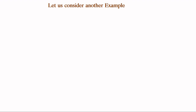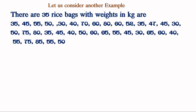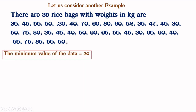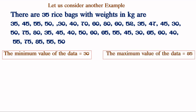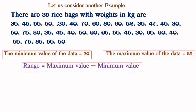Let us consider another example. There are 35 rice bags with weights in kilograms given below. The minimum value is 30 and the maximum value is 85. Now calculate the range. Range is maximum value minus minimum value, so 85 minus 30 equals 55.